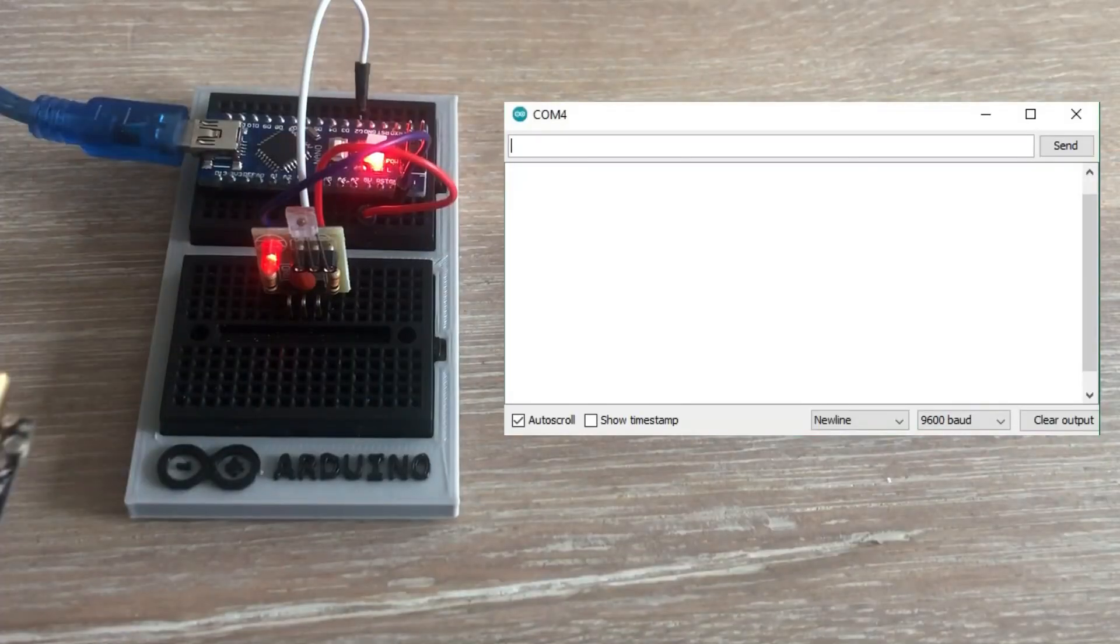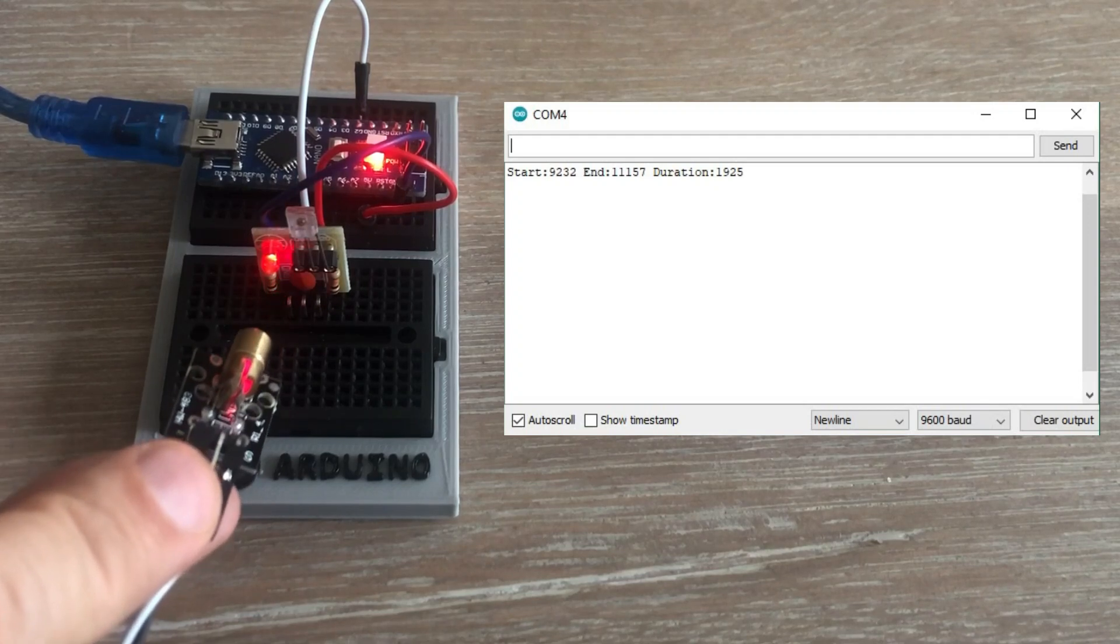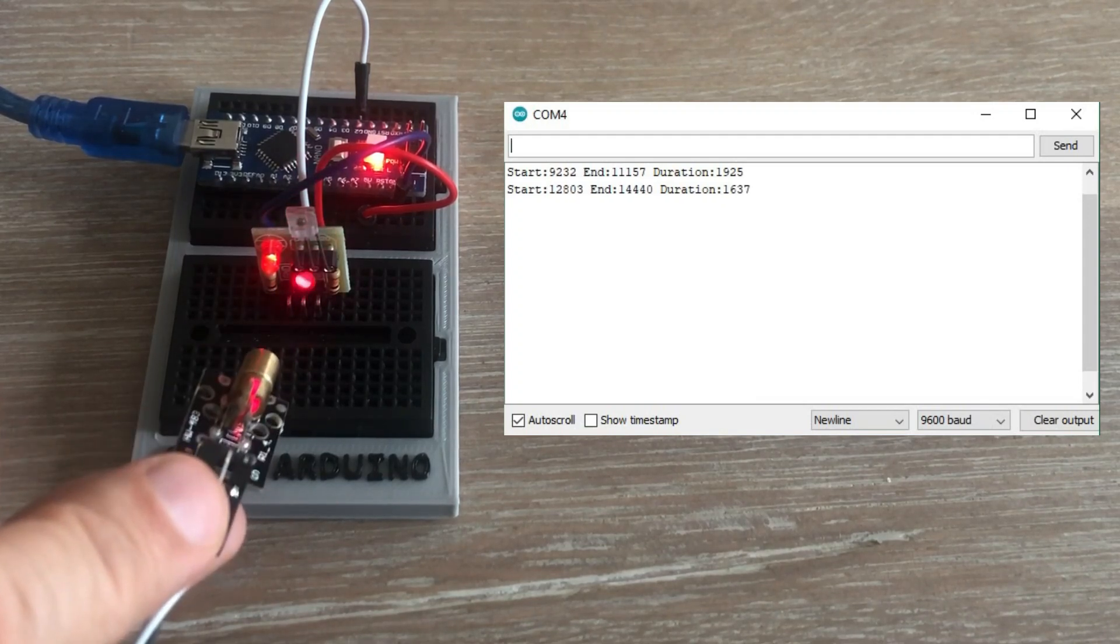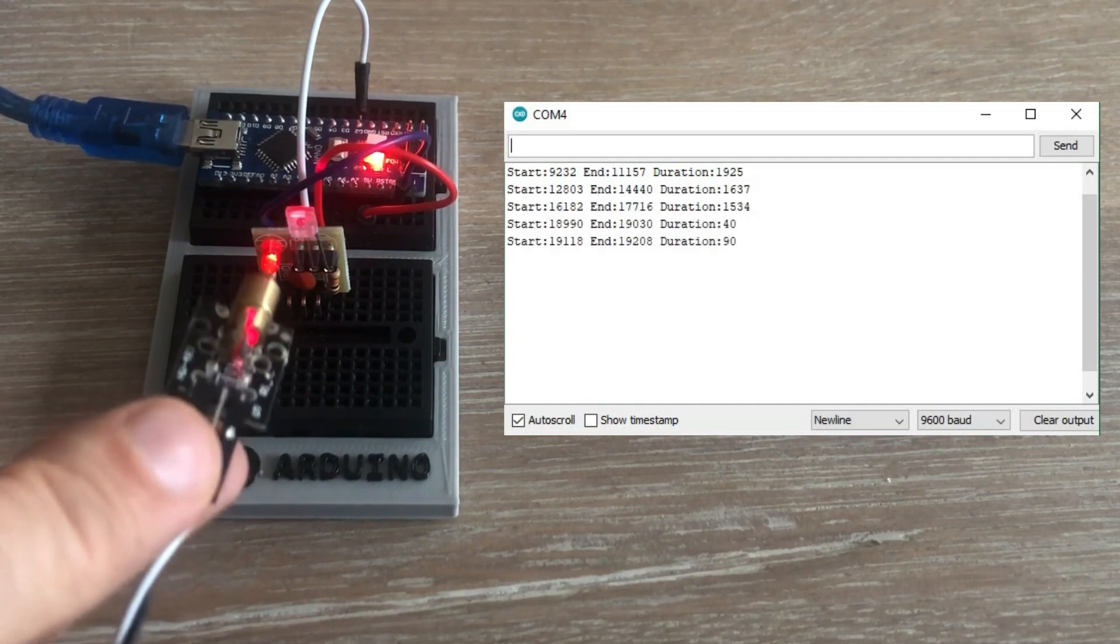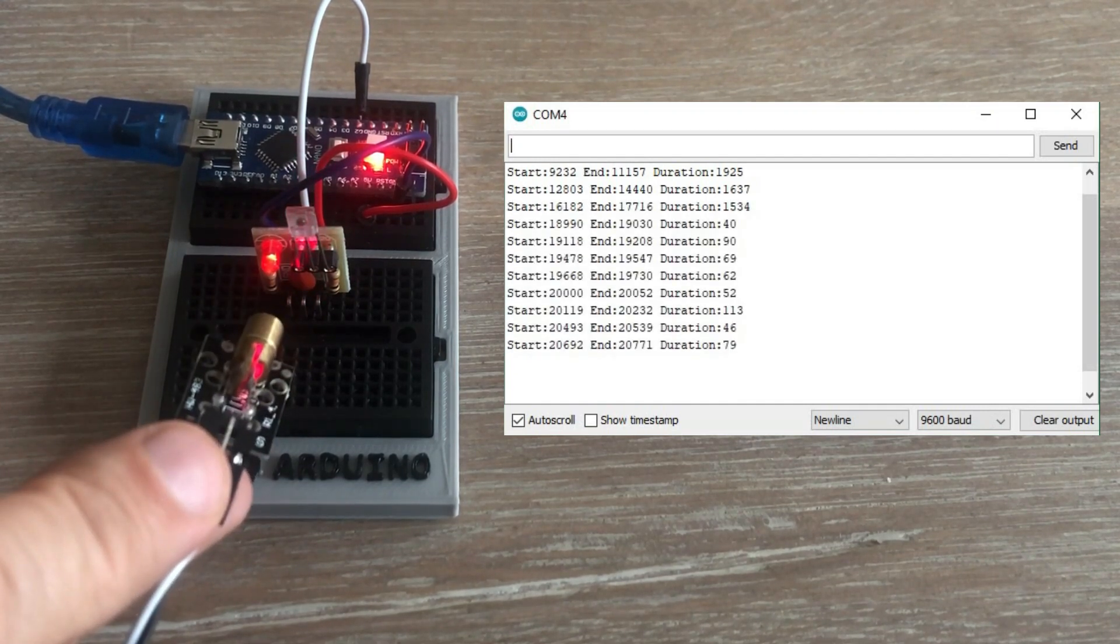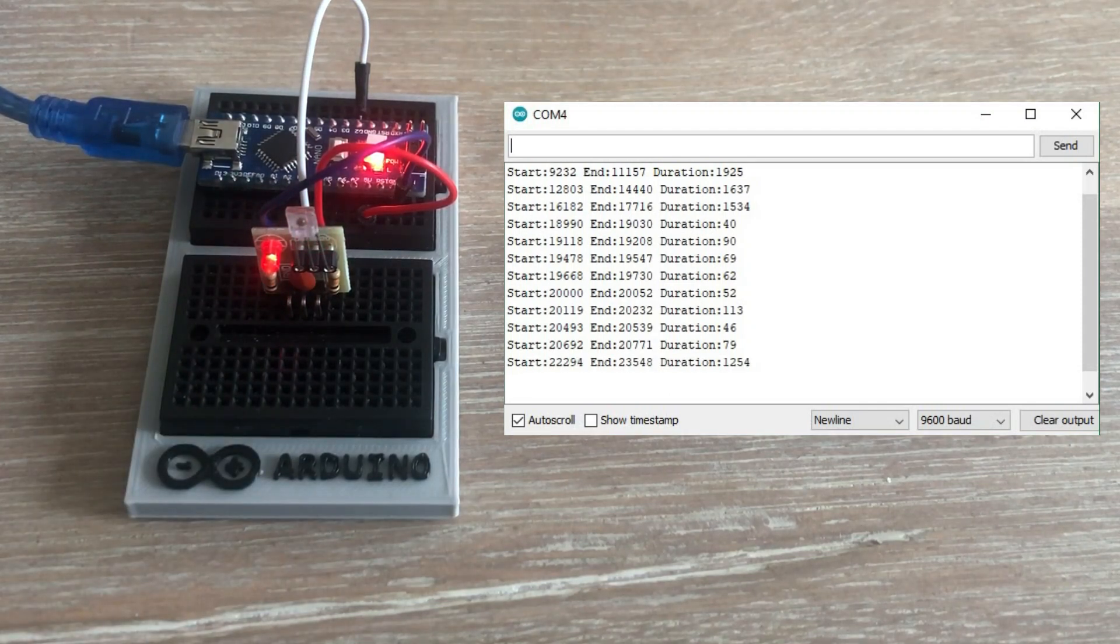Let's see how this code would work. As you can see, each time I point a laser beam at the sensor, nothing happens. But when I move it away, we get the information about the start, end and the duration of the laser signal. Please note that we can capture the signals that are barely several milliseconds in length.